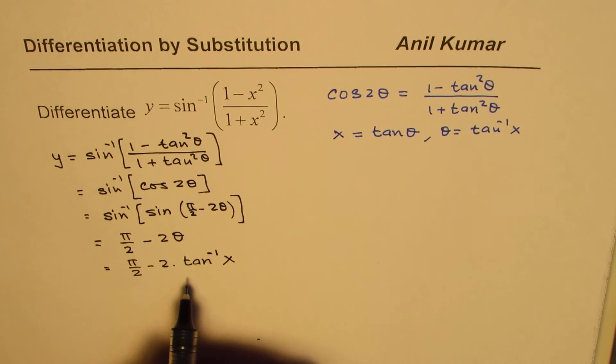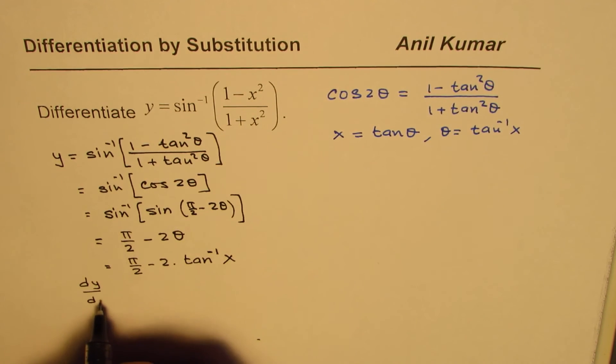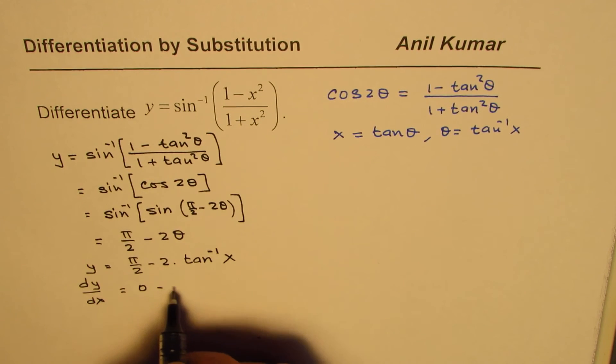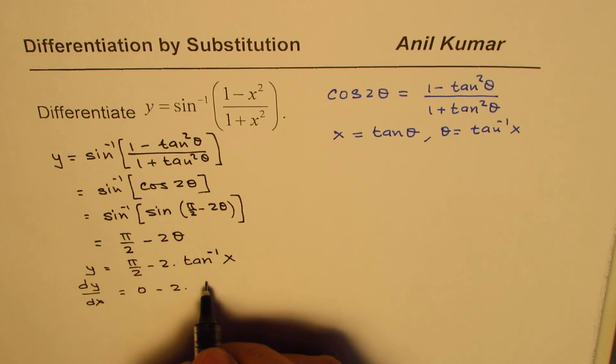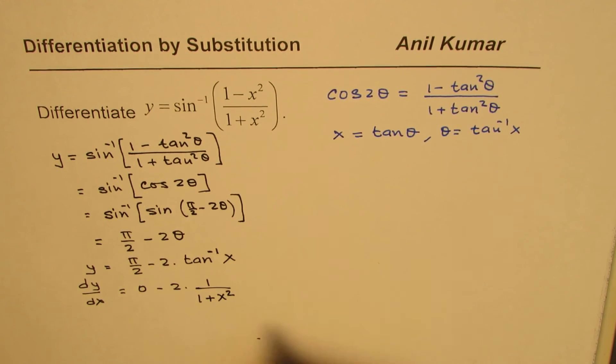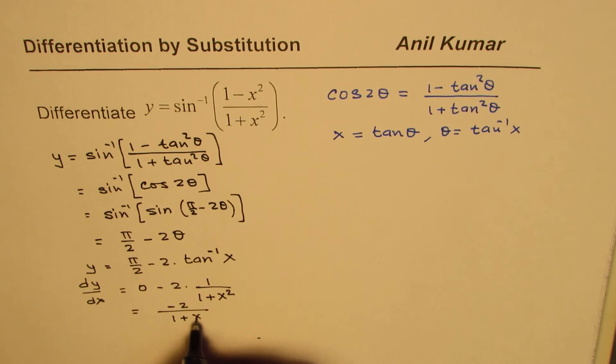Now we can differentiate and get the answer. So we get dy/dx. The derivative of the constant is 0, and here we have minus 2 times the derivative of tan inverse x, which is 1 over (1 plus x squared). So we get our result, which is minus 2 over (1 plus x squared).